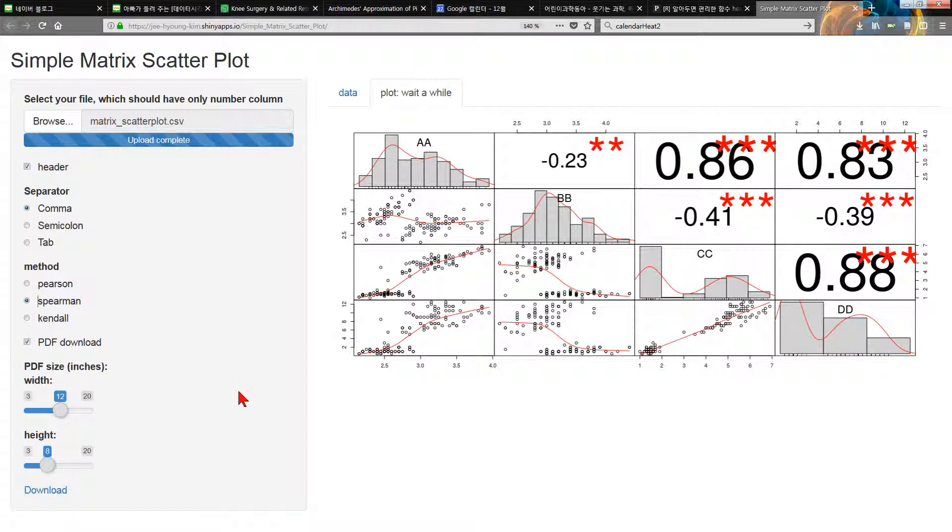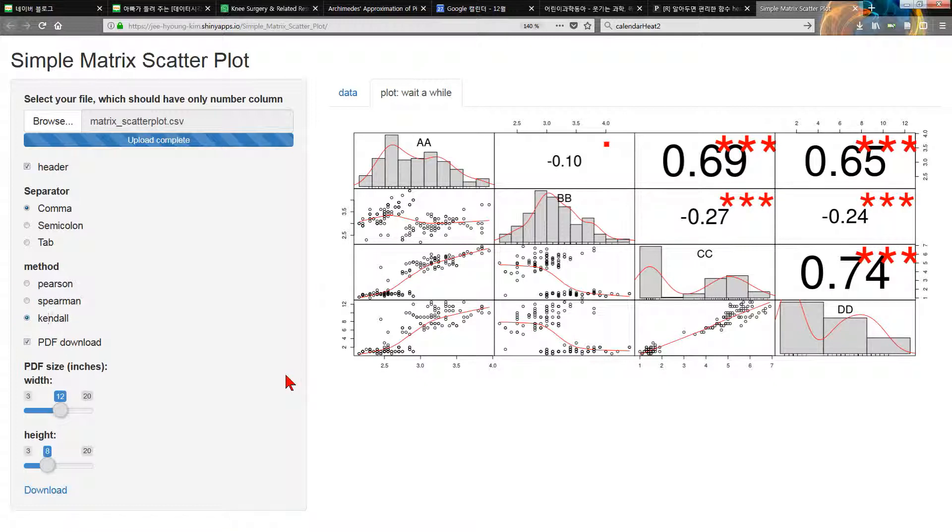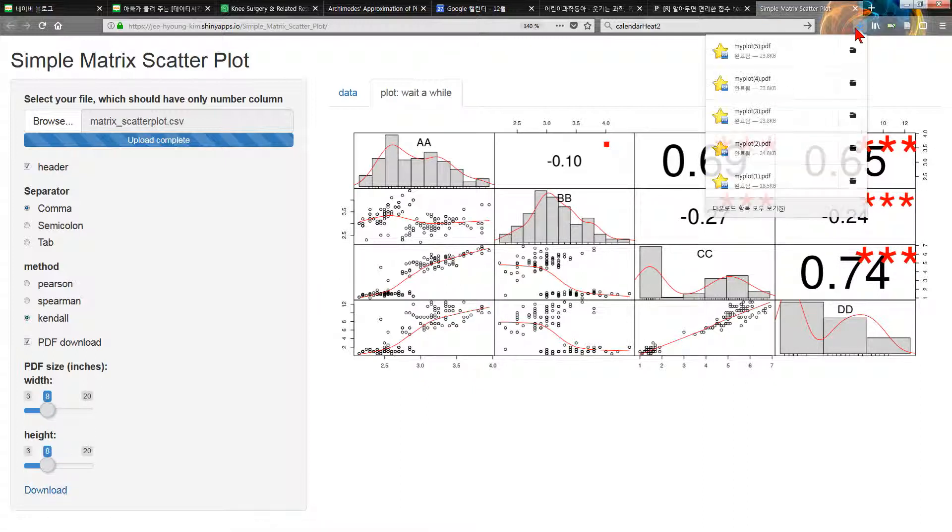Because there is no difference between plots. But the correlation coefficient will change according to the method. Then, in this case, you select the same inch. Download. Click download. 8 inch at 8 inch. And you can get the PDF file.